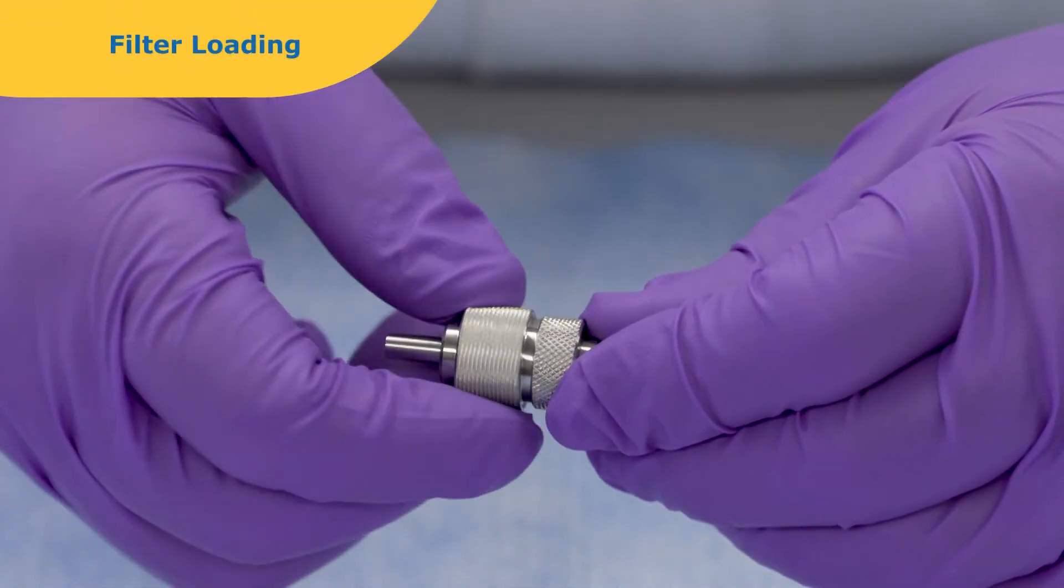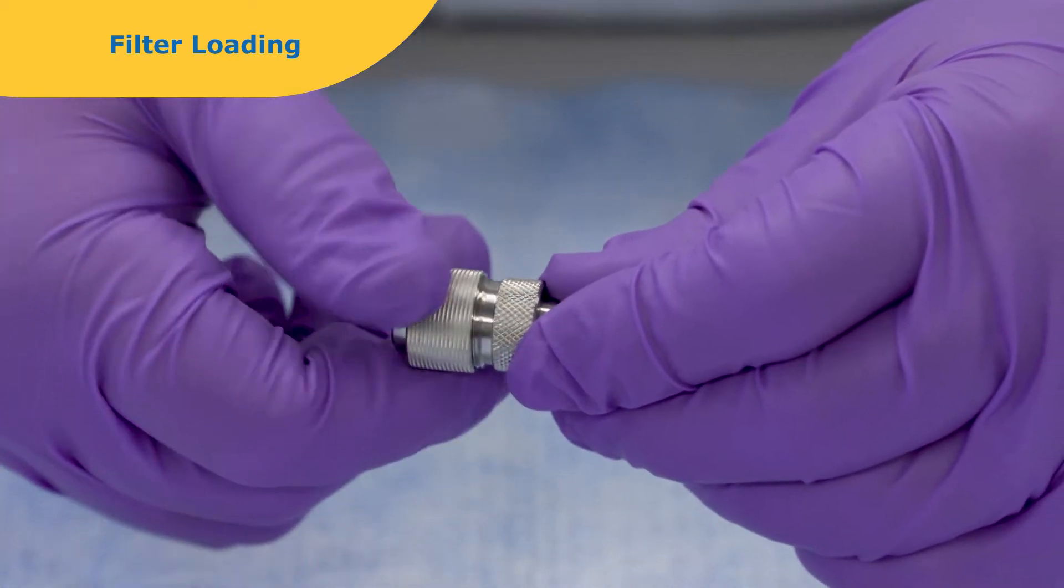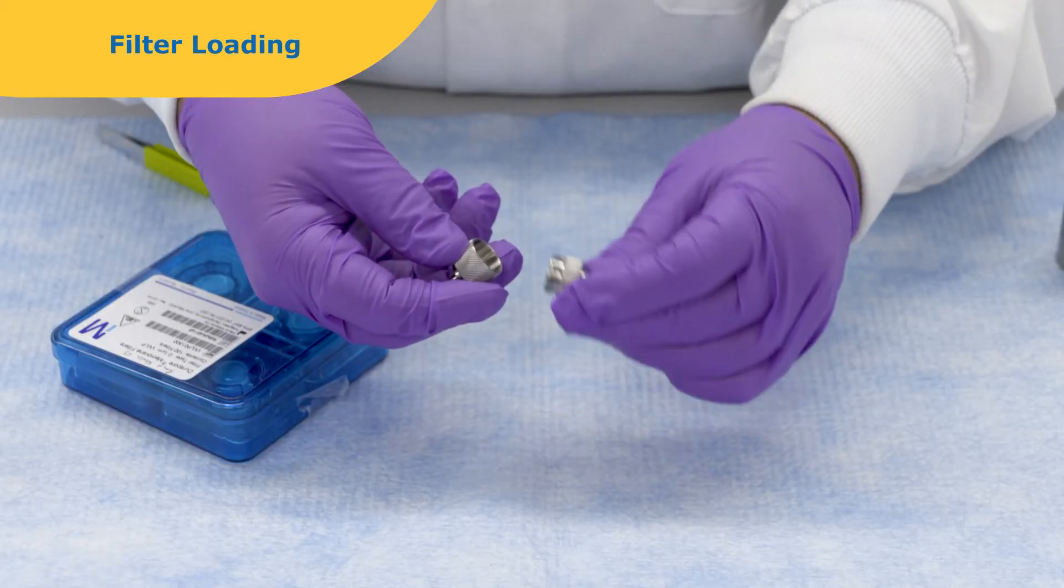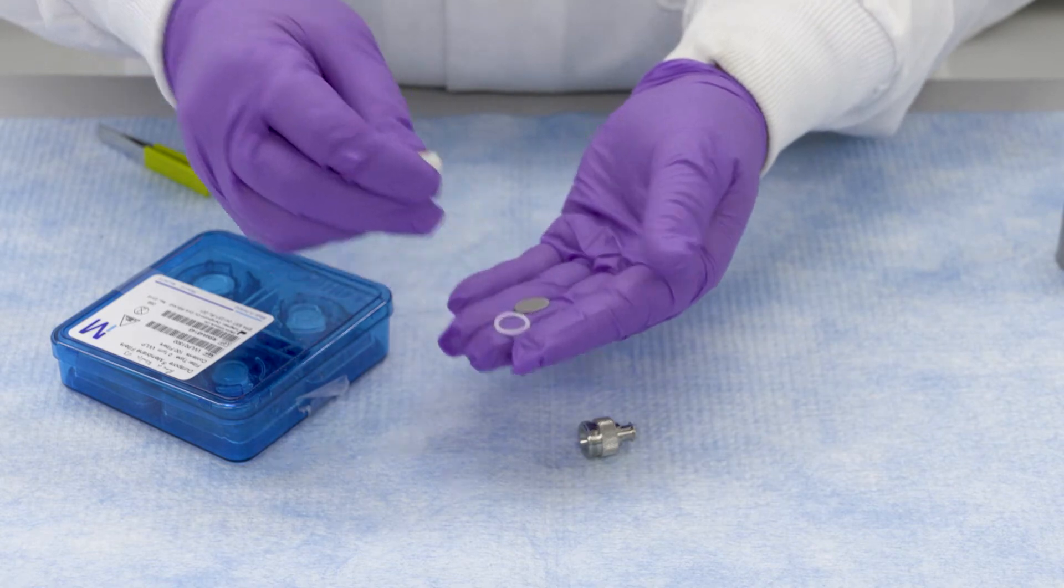To load a filter into the SWINI device, unscrew the inlet cover from the outlet base. Remove the O-ring, support screen, and flat gasket.